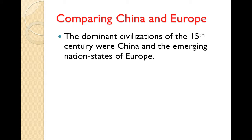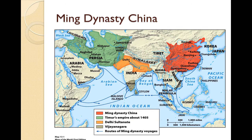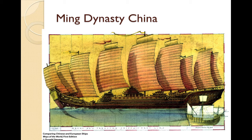Comparing China and Europe: The dominant civilizations of the 15th century were China and the emerging nation-states of Europe. The Ming dynasty was China's attempt to reset society following Mongol rule. The new emperors emphasized China's tradition, Confucian rituals, a Temple of Heaven, and reviving the examination system. China's political system, a model of efficiency, revived the economy so completely that in the 15th century, China was probably the wealthiest country in the world. The voyages of Zheng He are a striking example: he set out in 1405 with over 300 ships and a crew of 27,000. By contrast, in 1492, Columbus sailed with three ships and 90 men.